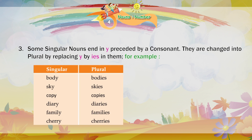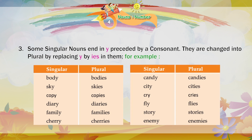Singular — Plural. Body — Bodies. Sky — Skies. Copy — Copies. Diary — Diaries. Family — Families. Cherry — Cherries. Candy — Candies. City — Cities. Cry — Cries. Fly — Flies. Story — Stories. Enemy — Enemies.